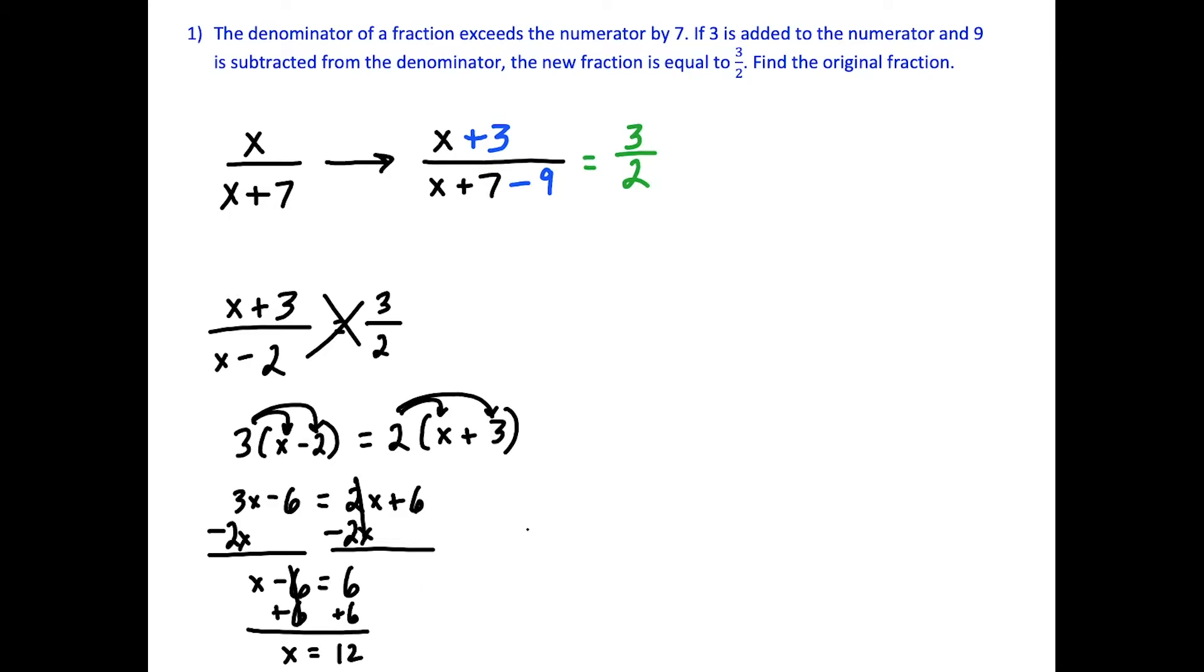But then we have to be careful. The question is asking us to find the original fraction. So this is the original fraction before we did any transforming. So if we plug back in, we're going to have 12 over 12 plus 7, which simplifies to 12 over 19. And this is our final answer to the first question.